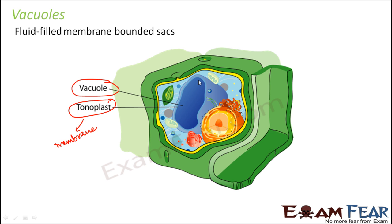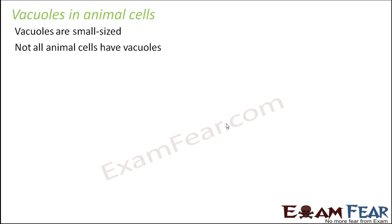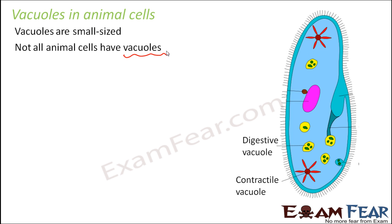The vacuole is so big that it has pushed the nucleus towards the periphery — it has taken up a lot of space. In animal cells, vacuoles are small in size, and moreover not all animal cells have vacuoles. That is why whenever the term vacuole comes up, we relate it more to plant cells, where they are very big in size and definitely present.